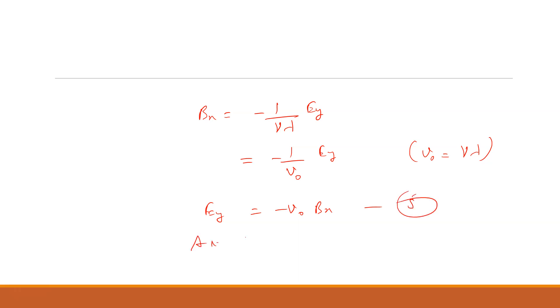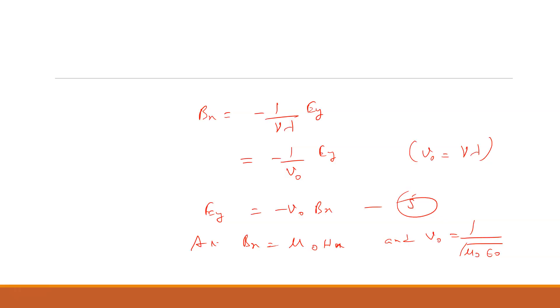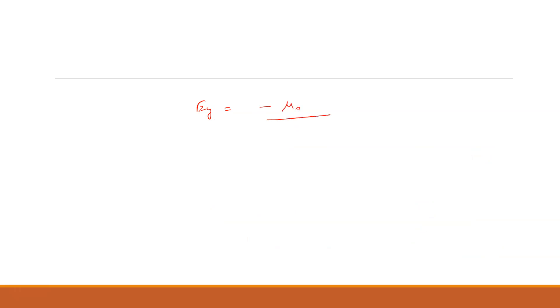Now, BX = μ₀HX since B = μ₀H, and v₀ = 1/√(μ₀ε₀). Putting these values into equation 5: EY = −(1/√(μ₀ε₀)) · μ₀ · HX. Simplifying, we get EY = −√(μ₀/ε₀) · HX.